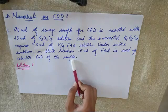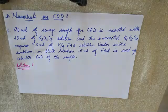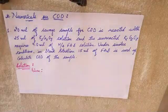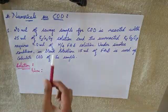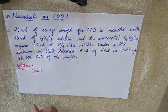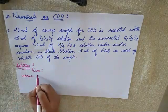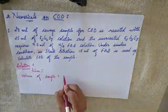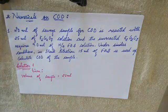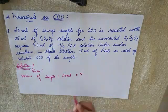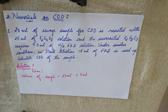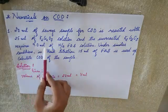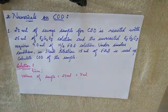Now let us go with the solution. Whenever we need to solve the problem, you need to solve it stepwise. Initially you want to write what has been given. So what is given? First, the volume of sample is equal to 20 ml — we write this volume of sample as V ml. Then what else is given: the volume of FAS that is consumed during sample titration is 9 ml.